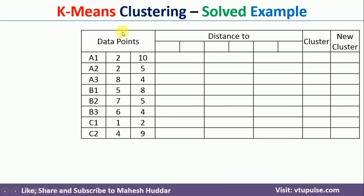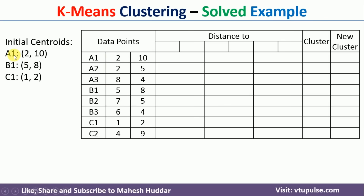Now these are the data points given to us. Given these data points, we need to calculate the distance from each data point to the initial centroids. The initial centroids are a1, b1, and c1. To calculate the distance, we have to use Euclidean distance as stated in the problem definition.